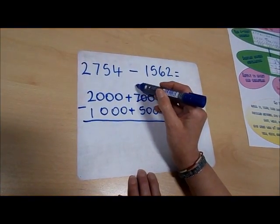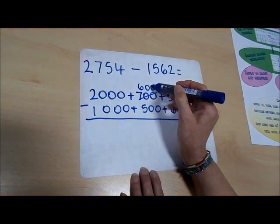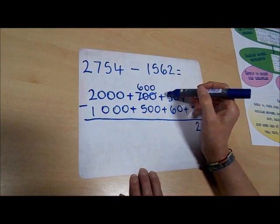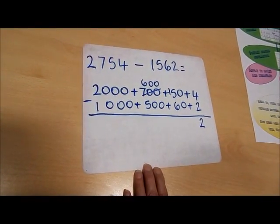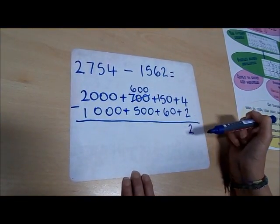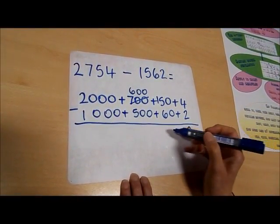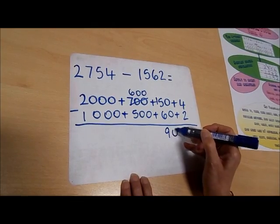So 700 will become 600. And then we're going to bring the 100 over into this column. So now it's 150 take away 60, which is 90.